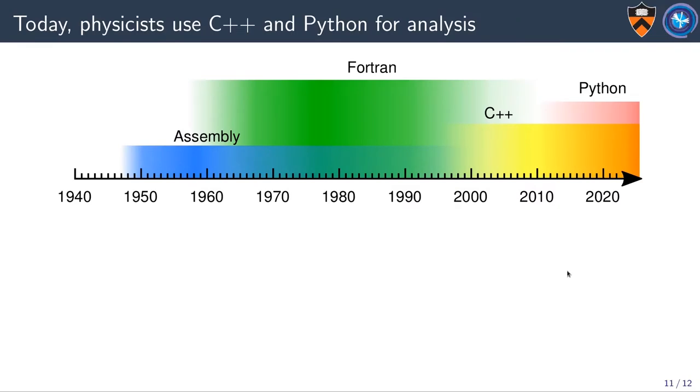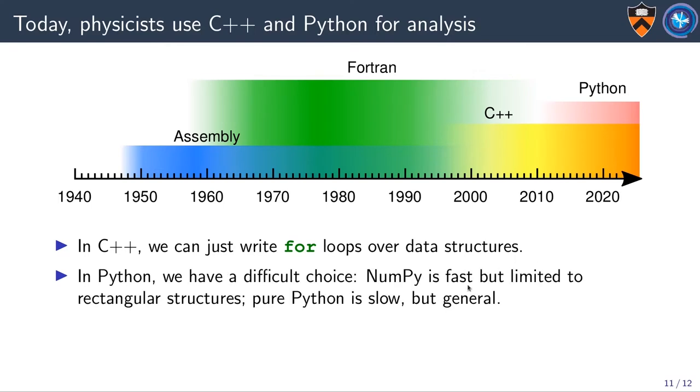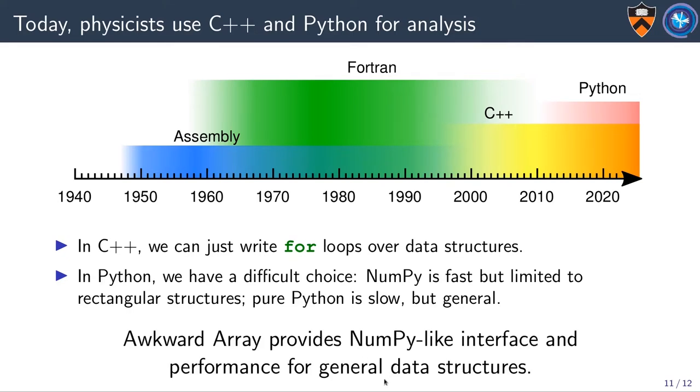Data structures have always been essential for this. Software packages from 1976 had to add data structures to Fortran at a time when Fortran itself didn't even have the for loop. Today, physicists use C++ and Python for analysis. In C++, we can just write for loops, but in Python, we have a difficult choice. NumPy is fast, but it's limited to rectangular structures. Pure Python is slow, but general. So that's why we created this Awkward Array library.